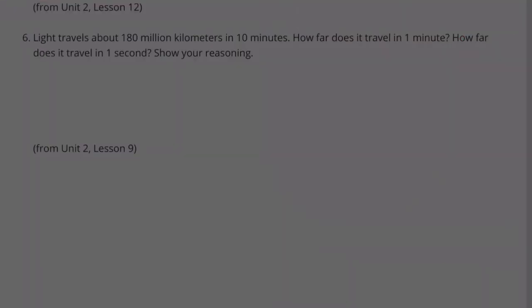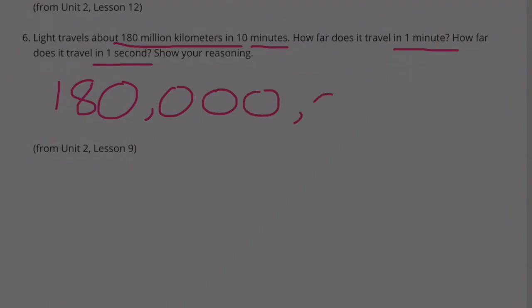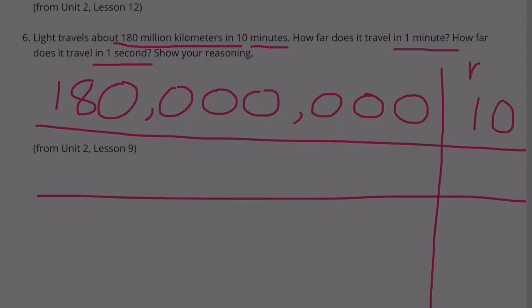Number 6. Light travels about 180 million kilometers in 10 minutes. How far does it travel in one minute? How far does it travel in one second? Show your reasoning. 180 million kilometers traveled in 10 minutes — how far would that be in one minute? Let's move the decimal over one place to make it 10 times smaller.